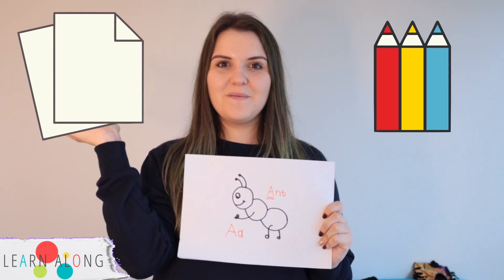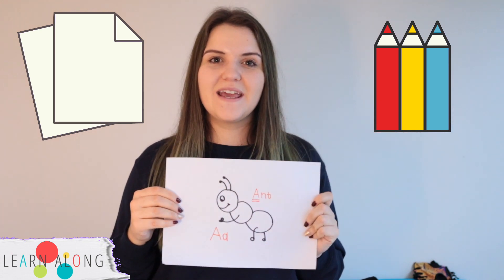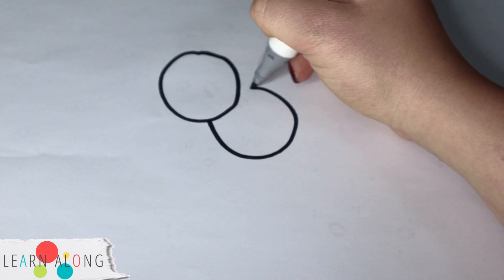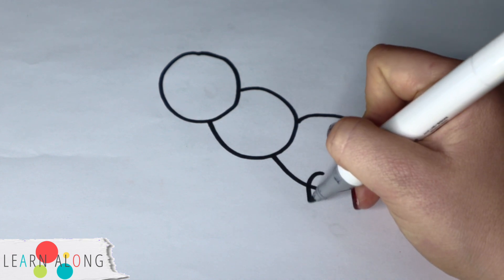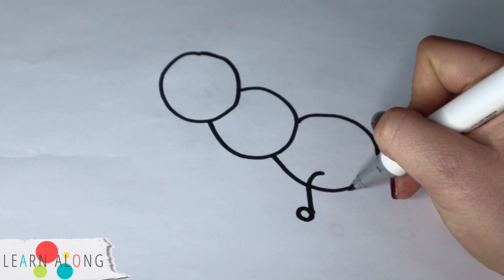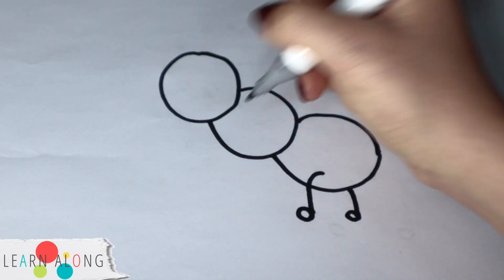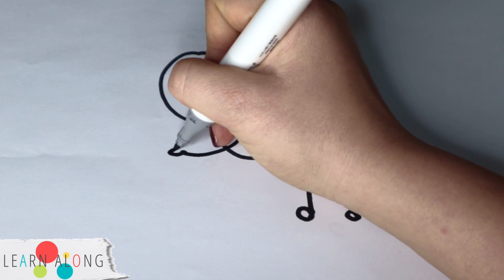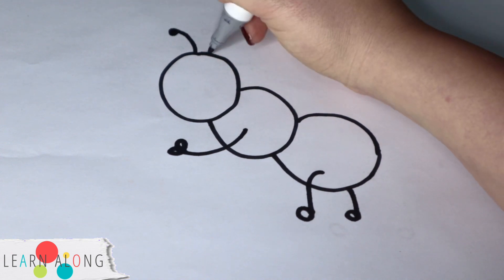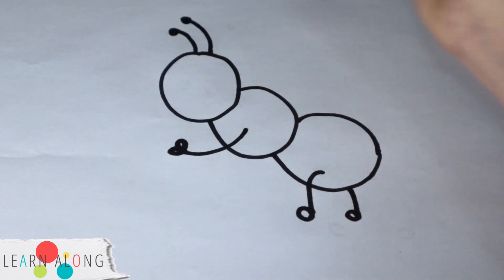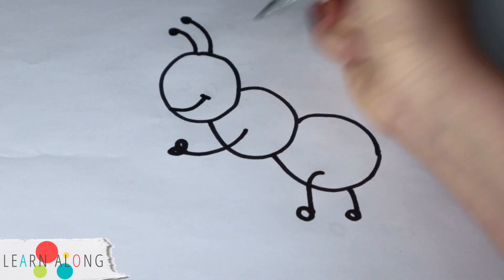So first, grab some paper and color pens, and we can draw together. Are you ready? Let's go! First, you need to draw one circle for the head and two circles for the body. Then you can draw legs and feet. Now you can draw one arm and a hand. Don't forget, ants have two antennae.